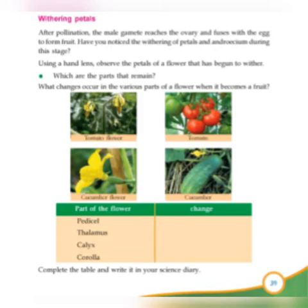Withering petals. After pollination, the male gamete reaches the ovary and fuses with the egg to form fruits. Have you noticed the withering of petals and androecium during this stage?